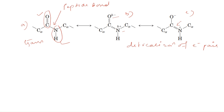So the peptide bond, though it is a single bond, has a partial double bond character because of delocalization of electron pairs. This arrangement is known as resonance stabilization. Because of this double bond character, the peptide bond is more rigid and gives more strength to the peptide backbone.